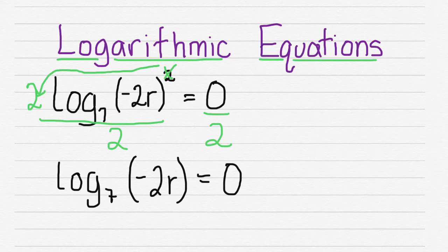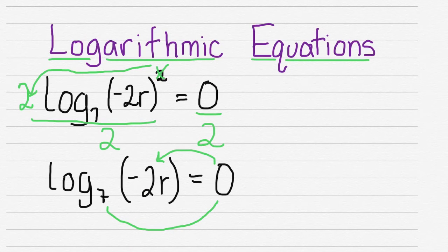Now we have a logarithm that we can write in exponential form. We're going to take our base and do our circular. We're going to write our base 7 with our exponent of 0 is equal to negative 2r.